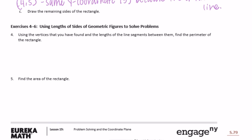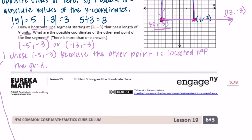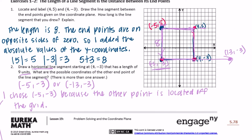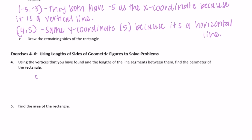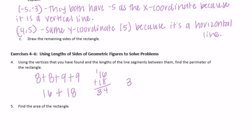Exercises 4 through 6. Using the vertices and the lengths of the line segments between them, find the perimeter of the rectangle. Perimeter means we add up the lengths of all the sides. We already know two sides are 8 units and two sides are 9 units. So we add 8 plus 8 plus 9 plus 9, which equals 16 plus 18, which equals 34 units. The perimeter is 34 units.